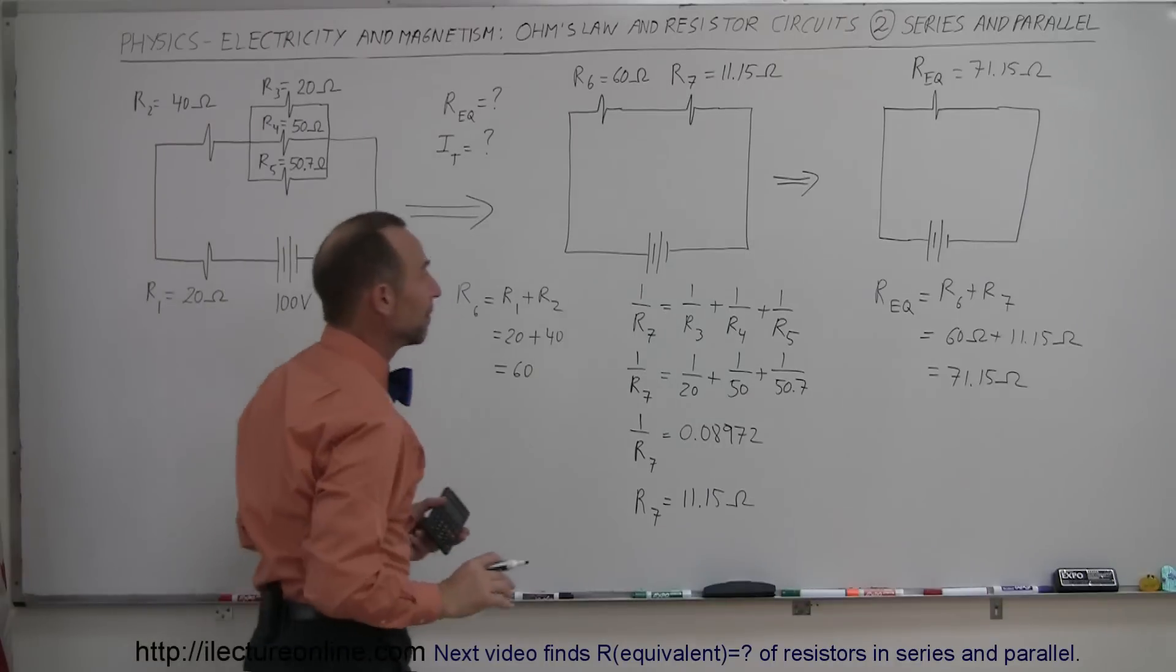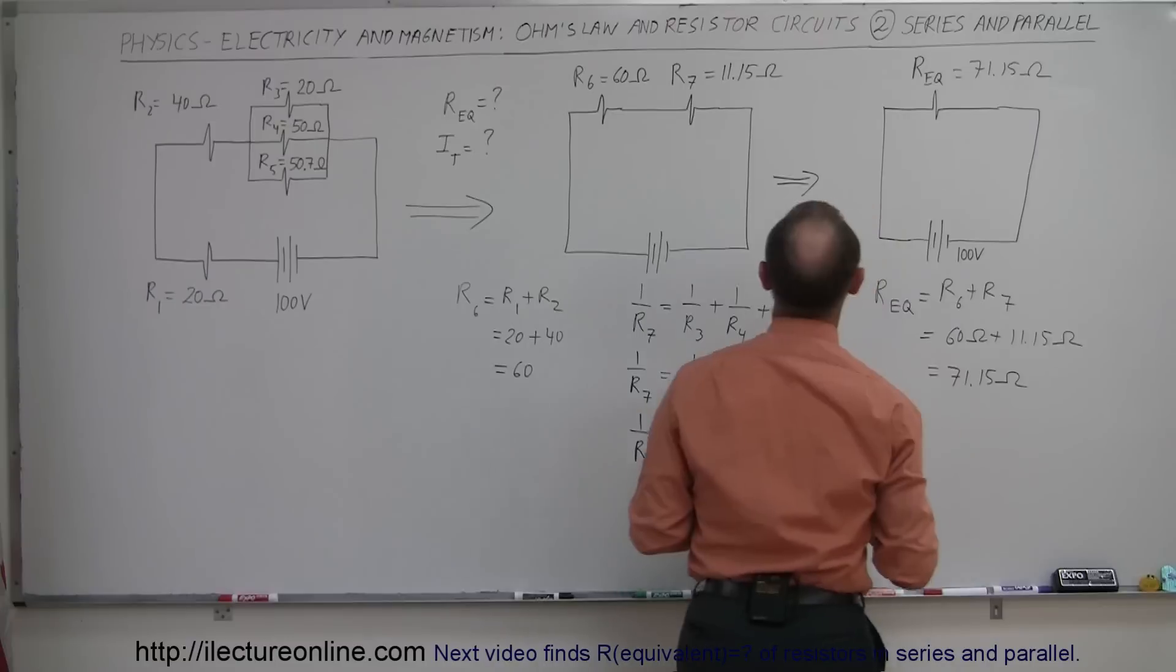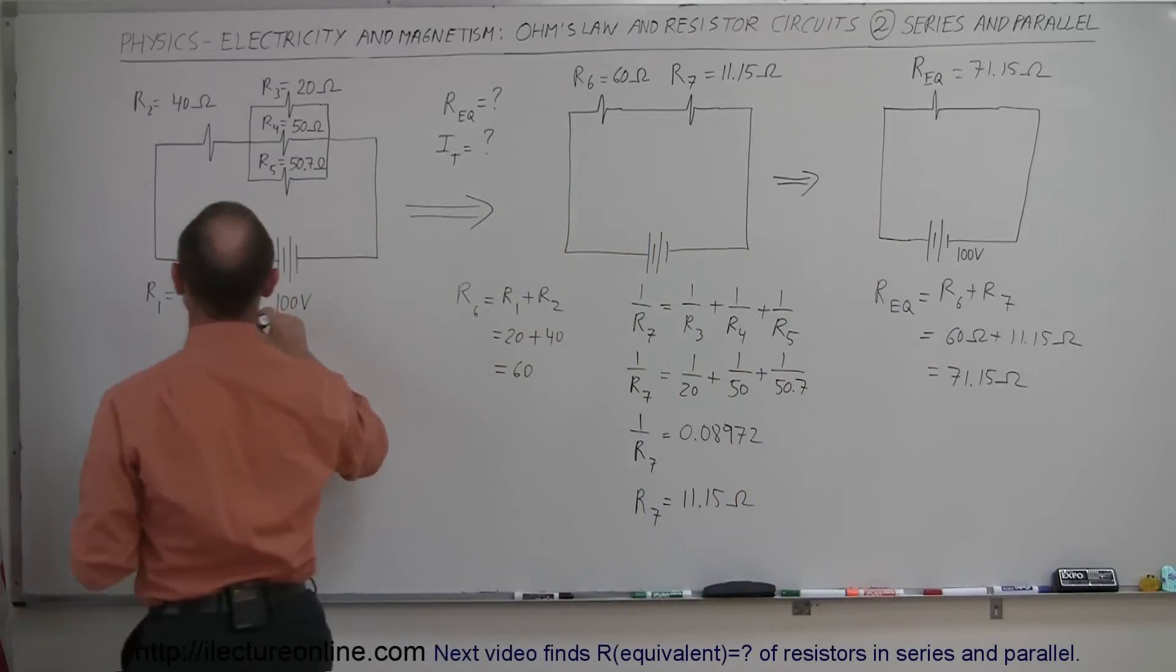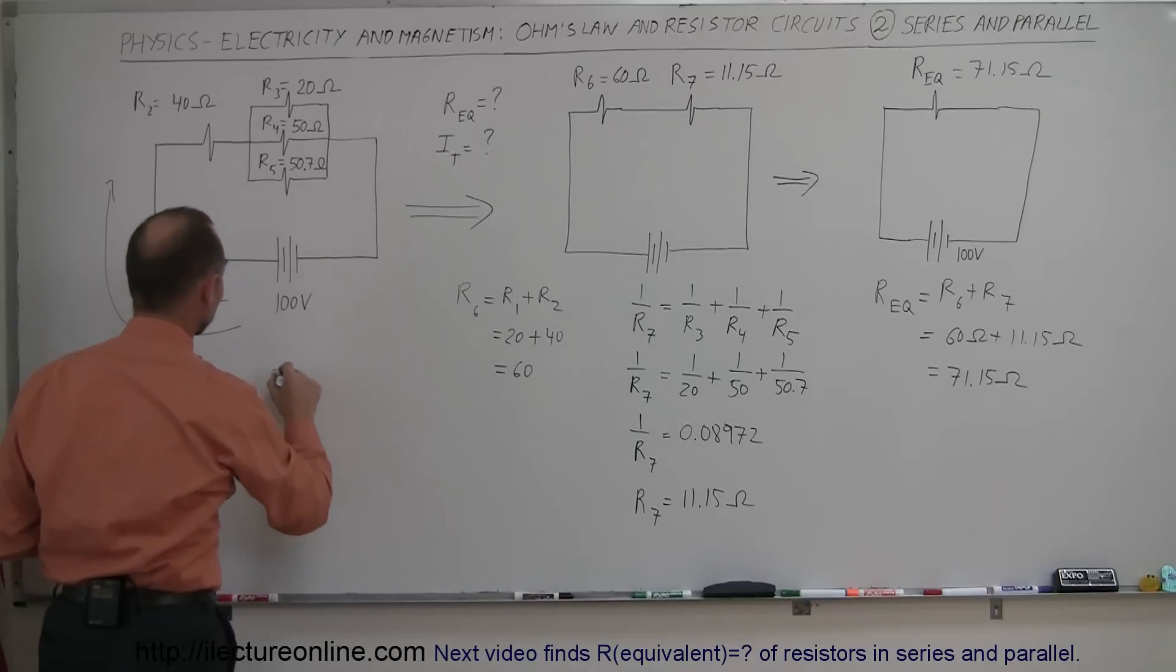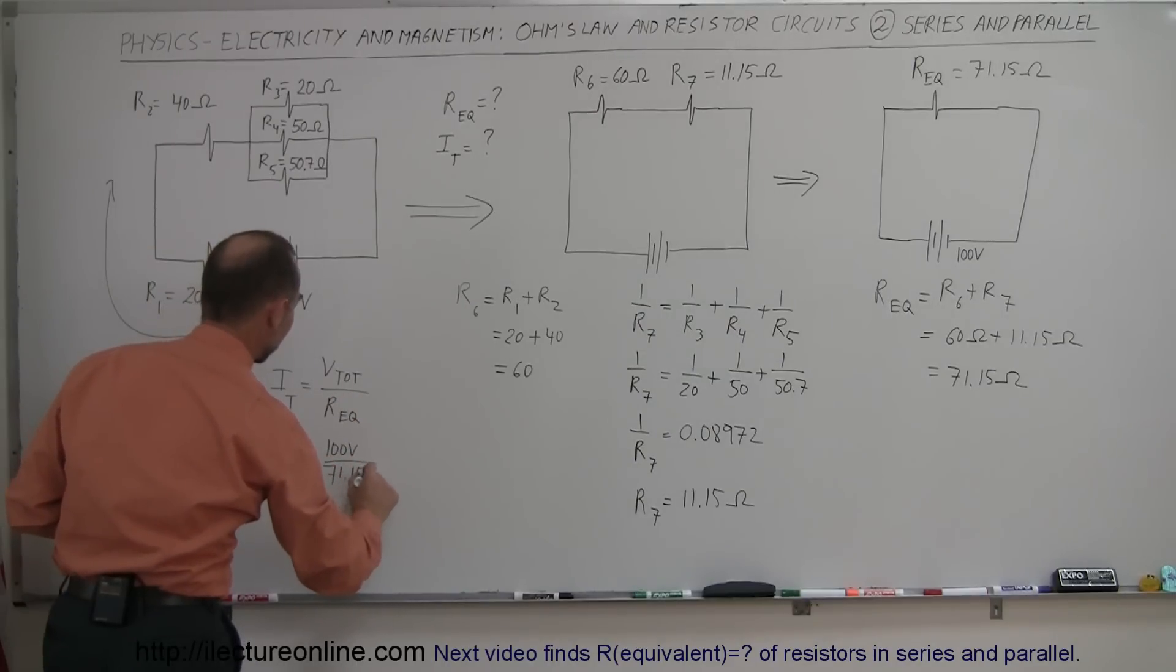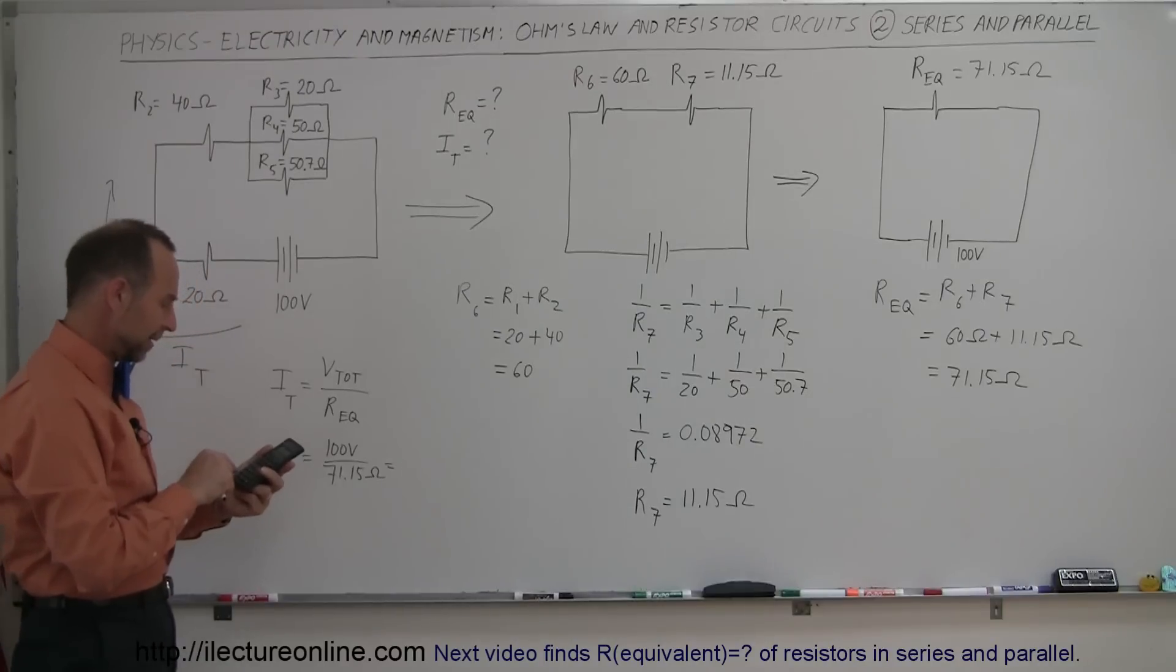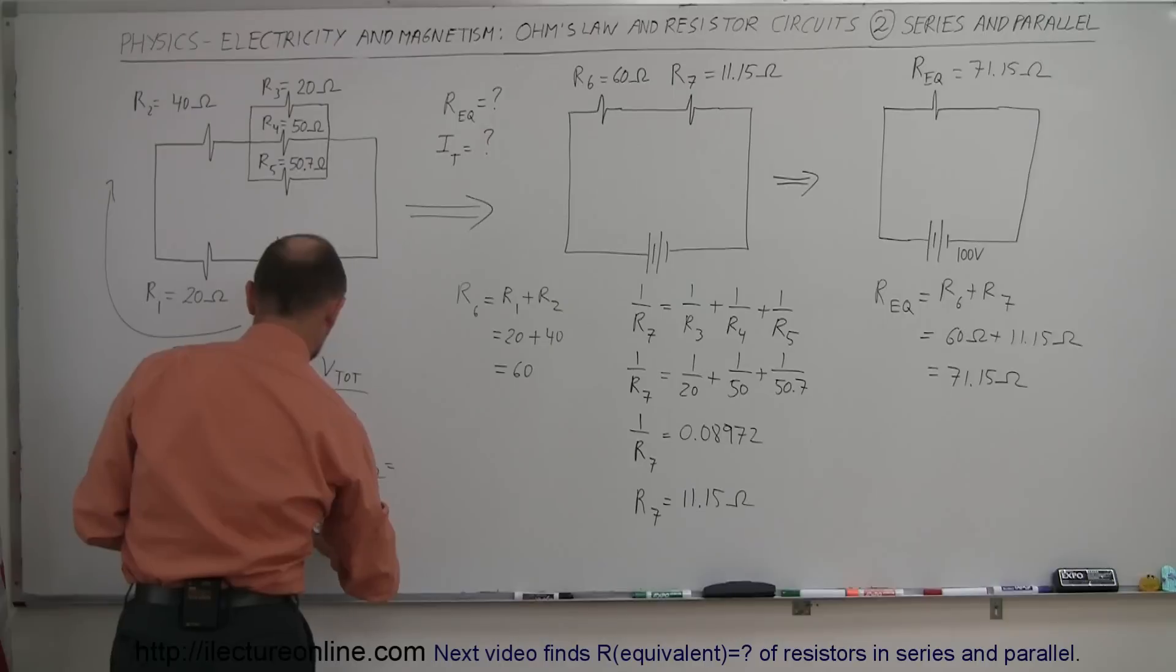Now, since we know the voltage across the battery, 100 volts across the battery, so now to find the current, the total current in the circuit, I total, we use Ohm's law. And Ohm's law says that I total is equal to V total divided by R equivalent, the total equivalent resistance of the circuit. So we have the battery of 100 volts, an equivalent resistance of 71.15 ohms. And so 100 divided by that, so 100 divided by 71.15 equals, and we get 1.4 amps.